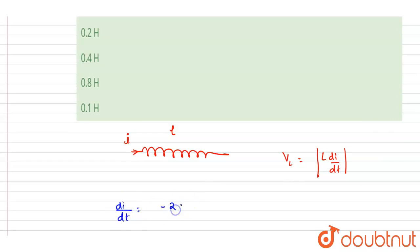it will be minus 2 minus 2, so if you see this, if I talk about the magnitude of this, this is 4 by 5 into 100, so it will be 80 ampere per second.